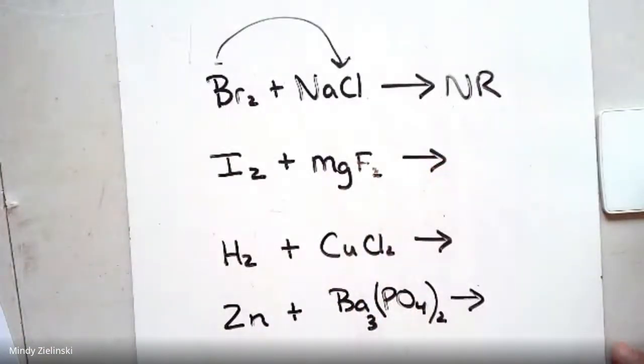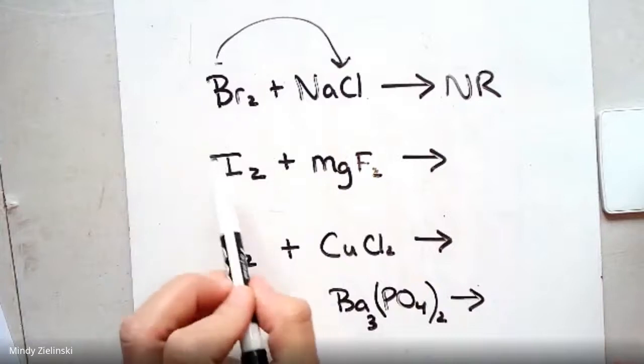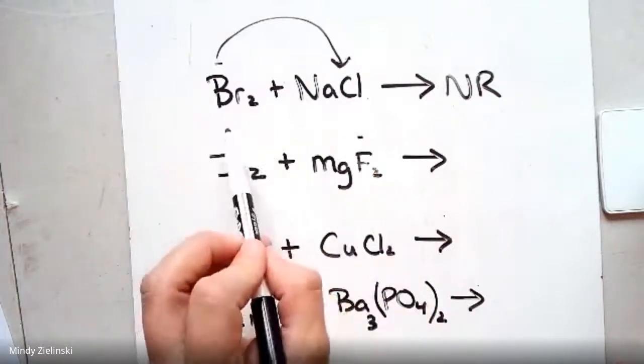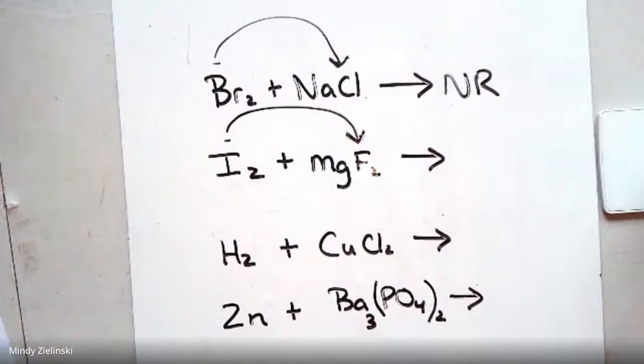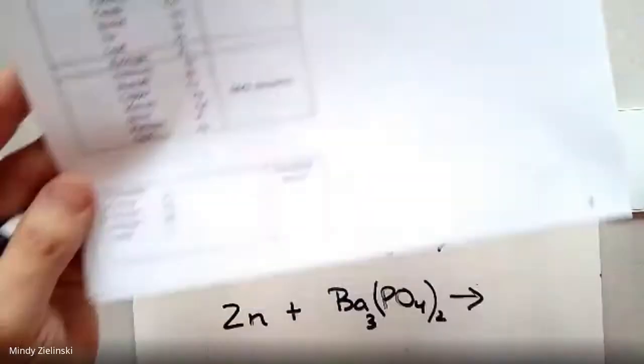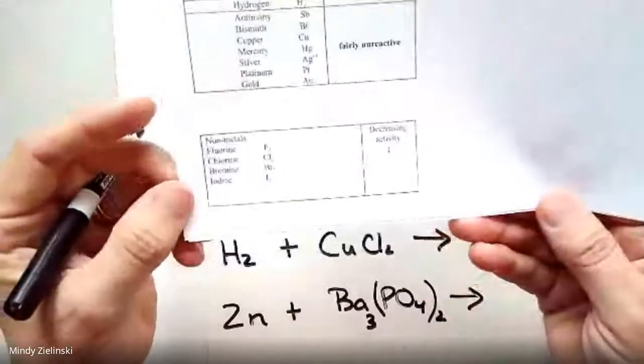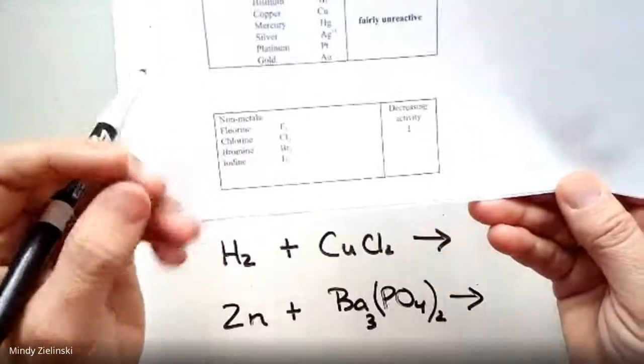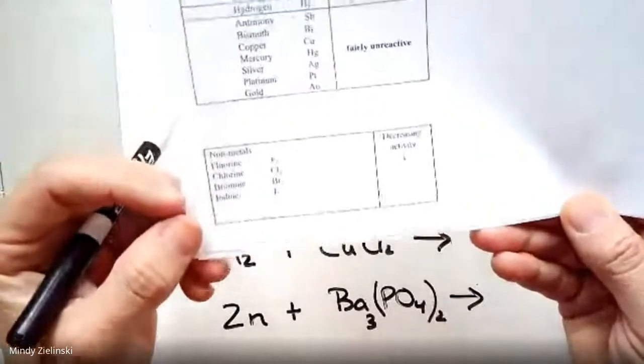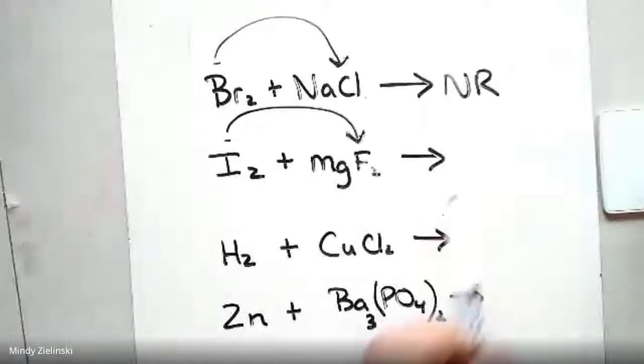Next, likes replace likes, negative and negative. Is iodine strong enough to replace and kick out chlorine? If it's listed above chlorine, then it is. So let's look. Is iodine listed above chlorine? And that answer is no as well. When we look here, iodine is below it. So this would also be a no reaction.